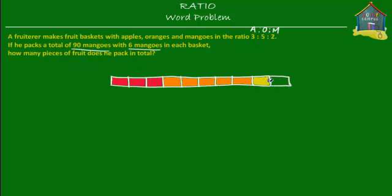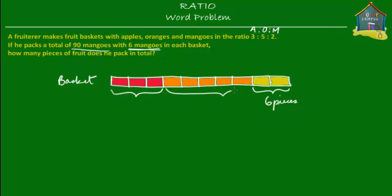Say yellow mangoes — so 1 and 2. And this is one basket. The next thing we know is that there are six mangoes in each basket. So this is one basket, and these are the mangoes — two sets of mangoes — and what we know is they are six in number. So six pieces of mangoes are in one basket. So if there are six pieces of mangoes in one basket, then what does that tell you about the number of apples and the number of oranges in each basket?